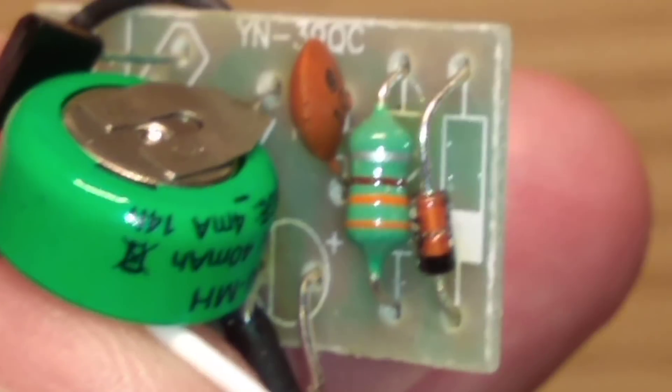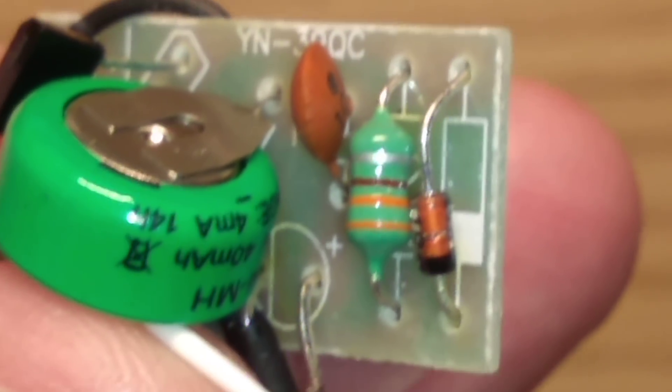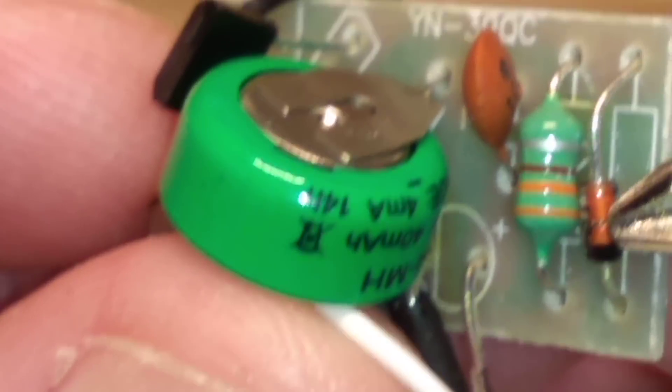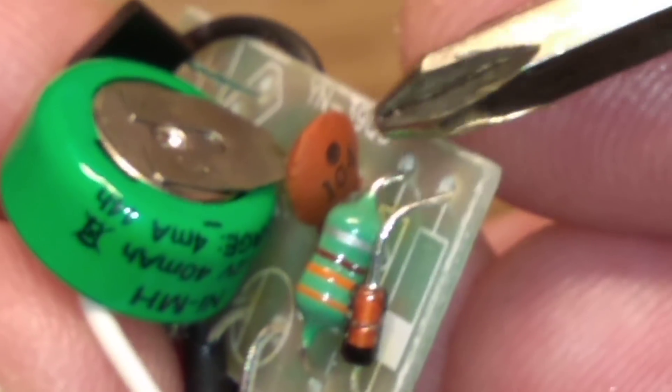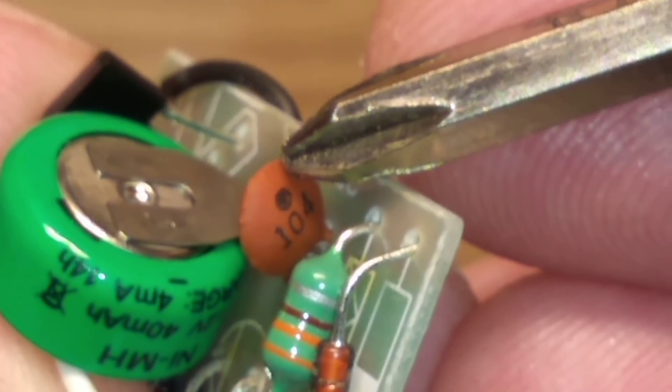It's got the little diode, the sort of 1N4148 type diode. Let me just try and point at that there, though most of you will have spotted that. And then it's got the capacitor which is 104, that's a 100 nanofarad capacitor.